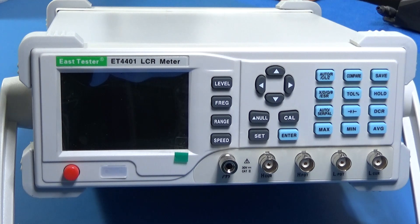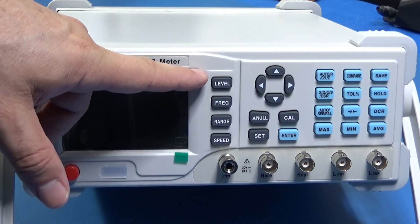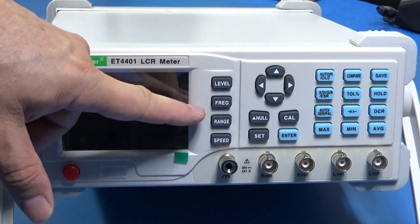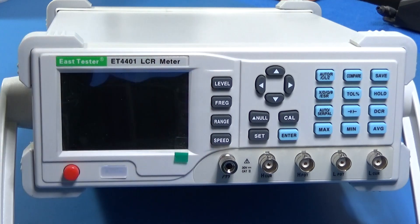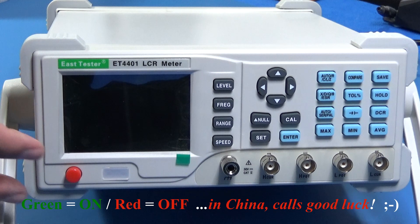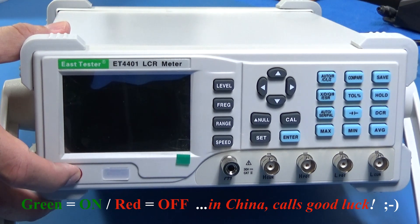Like any Chinese product there is something always that we have to understand and assimilate. As an example, we have the buttons here: power, level, frequency, range and speed. So now let's turn it on and let's accept the challenge.